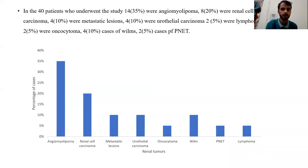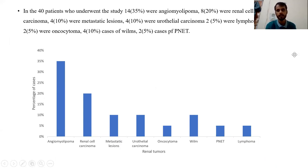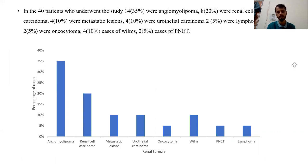In the results of 40 patients who underwent the study: 14 cases were angiomyolipomas, 8 cases were renal cell carcinoma, 4 cases were metastasis, 4 cases were urothelial carcinoma, 2 cases were lymphoma, 2 cases were oncocytoma, 4 cases were Wilms tumor, and 2 cases were PNET.